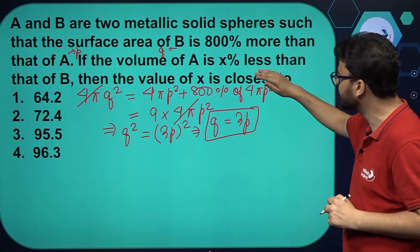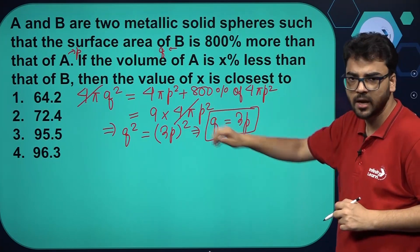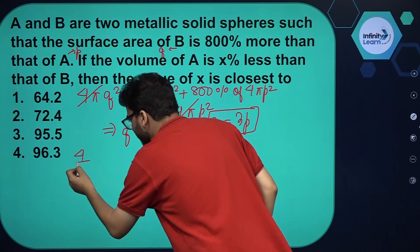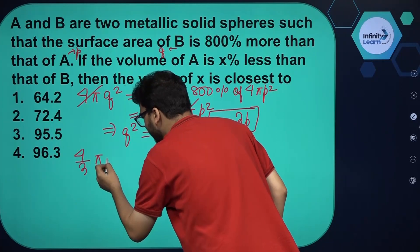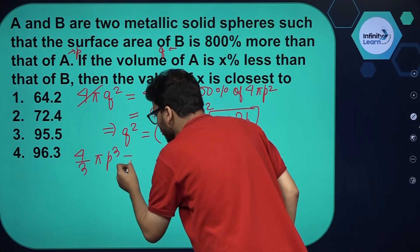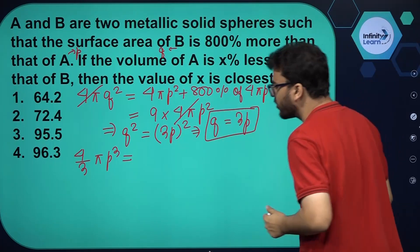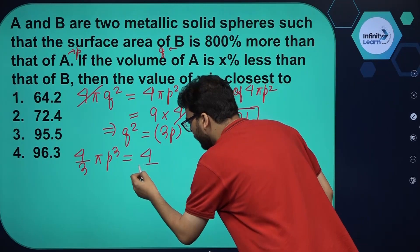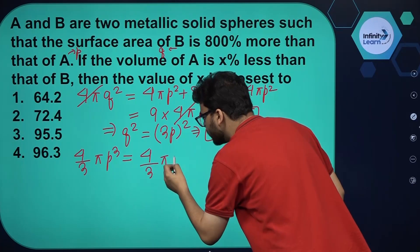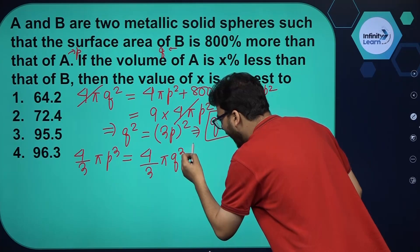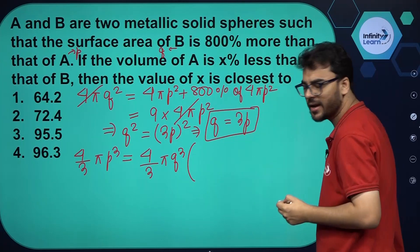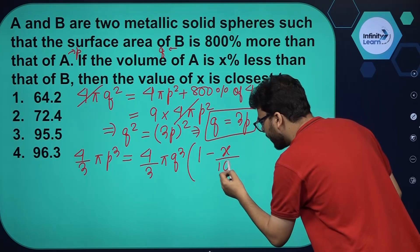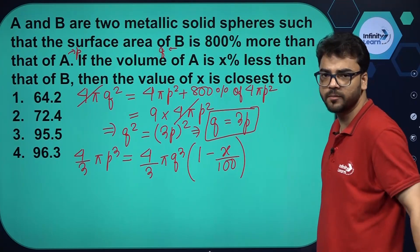The second part of the question: if the volume of A is x percent less than that of B. The volume of A is (4/3)πP³, and that equals x percent less than the volume of B, which is (4/3)πQ³. So we can write this as: Volume of A = (1 - x/100) × Volume of B.